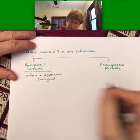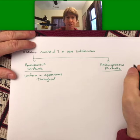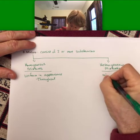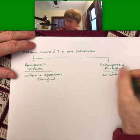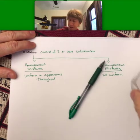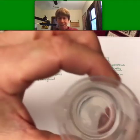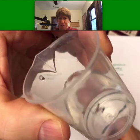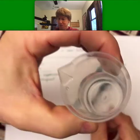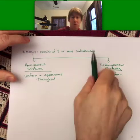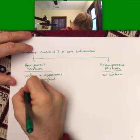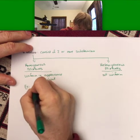Homogeneous mixtures are uniform in appearance. Basically, heterogeneous mixtures are not uniform. I'll just give an example of a homogeneous mixture: a homogeneous mixture is sugar water, so sugar dissolved in water.